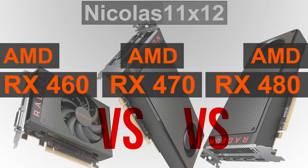The RX 460 I'm using for the test is equipped with 2GB of video memory, while the RX 470 and 480 cards come with 4GB. As for pricing, there's a very significant gap between the RX 460 and the two more powerful models, the RX 470 and 480.